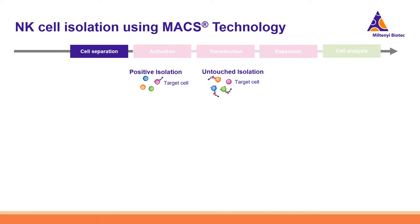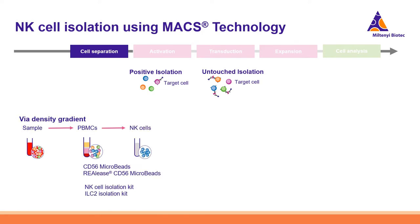I'll now discuss the difference between these two approaches and also whether you start from PBMCs — meaning you first perform a density gradient centrifugation — where we offer CD56 microbeads for positive isolation. These are either the standard CD56 microbeads or the REAlease CD56 microbeads that can be removed after cell isolation. There are also untouched isolation kits: the NK Cell Isolation Kit and the ILC2 Isolation Kit.